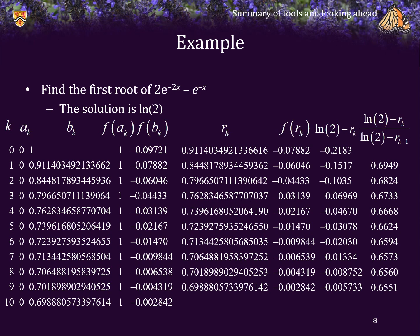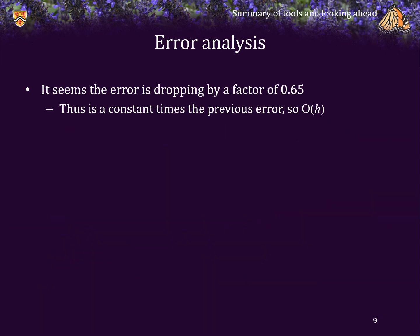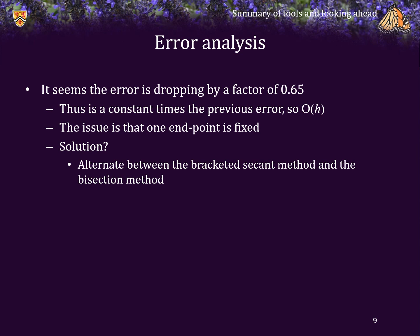This is still better than the bisection method, but it seems as if the error is dropping by a constant of approximately 0.65 times the previous error. That seems to suggest that the bracketed secant method is also order h, just like the bisection method. We've more or less deduced that the error is dropping by big O of h. The issue is that one of the endpoints is fixed. One way to resolve this is to alternate between using the bracketed secant method and the bisection method.